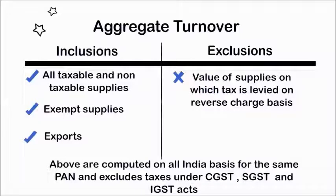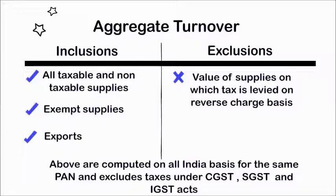So what exactly is aggregate turnover? It is the total value of all taxable supplies, non-taxable supplies, exempt supplies and exports. However, it does not include those supplies on which tax is levied on a reverse charge basis.